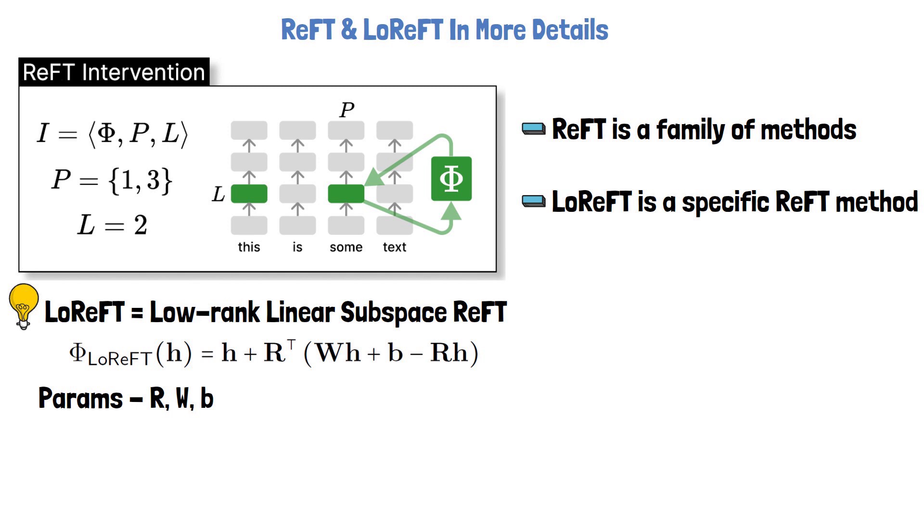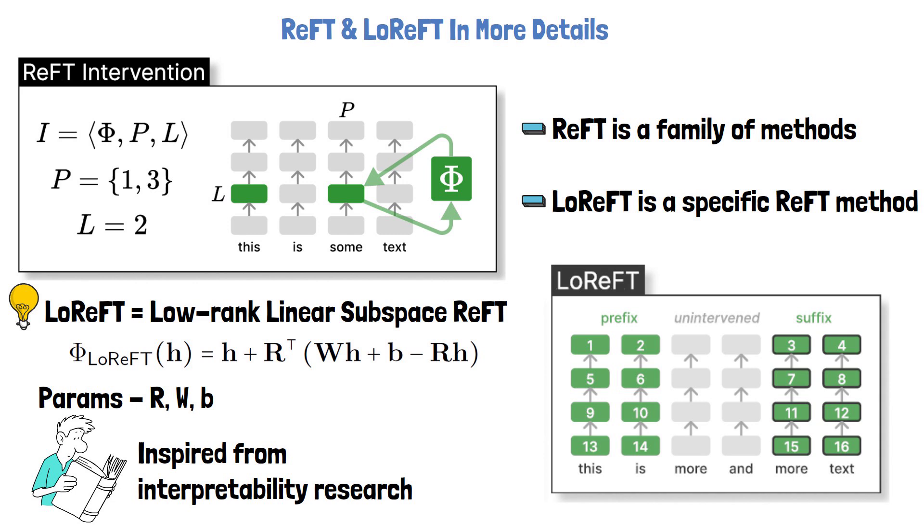The code for this can be found in the description of the video. The paper refers to research about neural network interpretability for the inspiration of these definitions, which we won't dive into in this video. In the following figure from the paper, we can see that with LoReFT we train interventions for prefix and suffix of the tokens, where the exact size of prefix and suffix are hyperparameters. The intervention parameters are either shared or not shared between different tokens of the same layer, and they are different between the different layers.